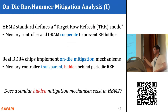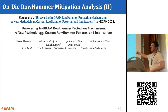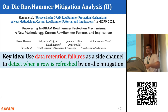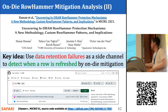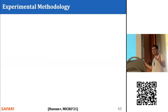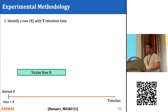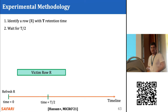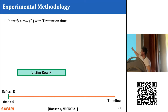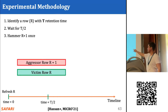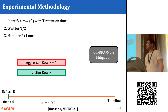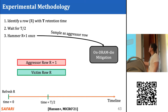We want to understand if a similar mechanism exists in HBM2 DRAM chips. We use the methodology from prior work where the key idea is to use data retention failures as a side channel to detect when a row is refreshed by an on-die mitigation mechanism. In our experiment, we find a DRAM row R with retention time T, meaning it will exhibit retention errors if not refreshed for T time units. At time zero we refresh R, wait half T, then activate the adjacent row R+1 once.